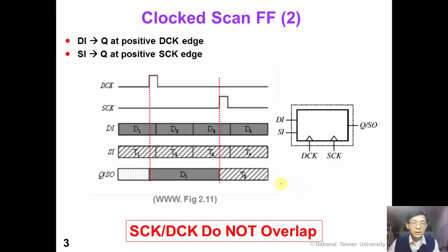This slide shows the timing waveform of a clock scan flip-flop. At the rising edge of the data clock, this flip-flop captures the data from the data input DI. At the rising edge of the scan clock, this flip-flop captures the data from the scan input SI. Please note that to avoid conflict, the scan clock and the data clock do not overlap, so there is only one clock rising at the same time.